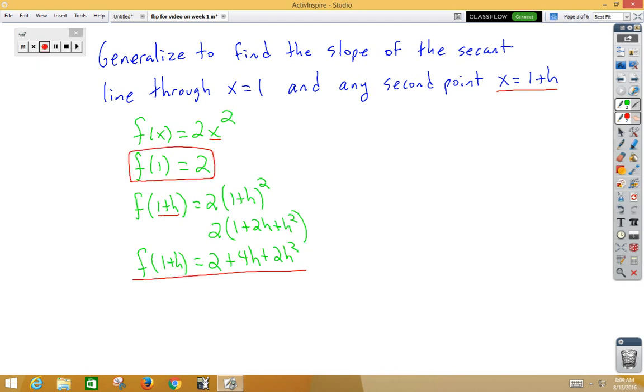This would be our second point. We still have our first point. Using slope formula, we would have y₂, which was 2 + 4h + 2h², minus y₁, which was 2. And then we have x₂, which was 1 + h, minus x₁, which was 1. We can simplify. The 2's are going to cancel on the top. The 1's are going to cancel on the bottom. We now have 4h + 2h² over h.